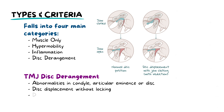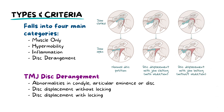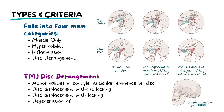Third is disc displacement with locking, where once again the disc is out of place, but in this case the jaw can get locked in either an open or a closed position. The fourth subtype is the degeneration of the TMJ, where the disc has a tear or is displaced for a long period of time, which leads to osteoarthritis, as the condyle and articular eminence are in closer contact.